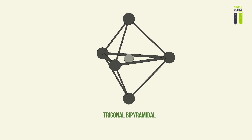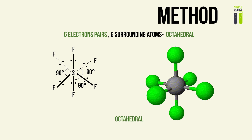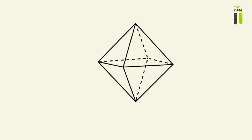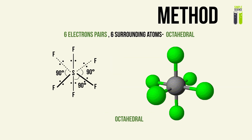Now let's look at the case where we have six electron pairs. In A-level you will always face six surrounding atoms in this case. You end up with a shape known as the octahedral. When the electron pairs freely repel each other at the maximum possible angle, you get a square planar molecule in the middle with two atoms above and below the central atom, forming an octahedral shape. It is called octahedral because when you join up all the surrounding atoms together you form an octahedron. The bond angle is 90 degrees at all bonding angles.